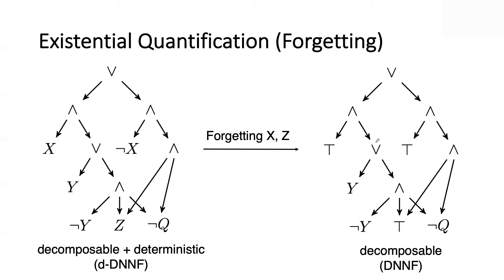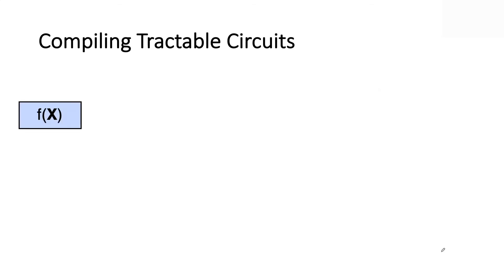Let me conclude with one more application, very important for knowledge compilation. The reminder: existential quantification is easy on decomposable circuits. Here's a circuit that is both decomposable and deterministic. To existentially quantify X and Z, you just replace those literals by true. If you start with decomposable and forget variables, you get decomposable back. But if the original was deterministic, when you forget variables, determinism is no longer guaranteed to be carried through.